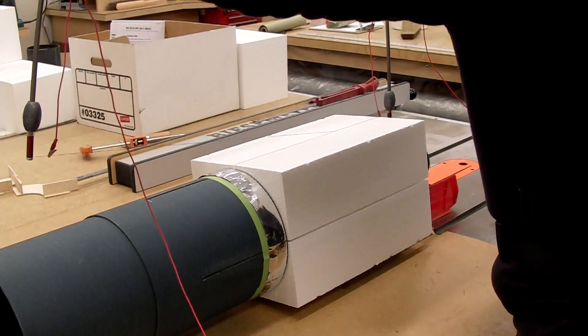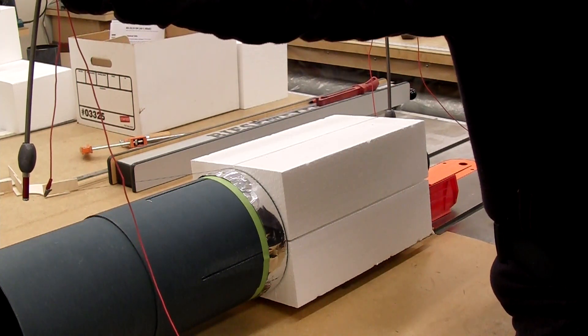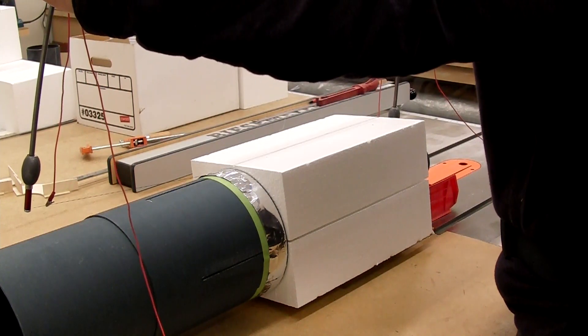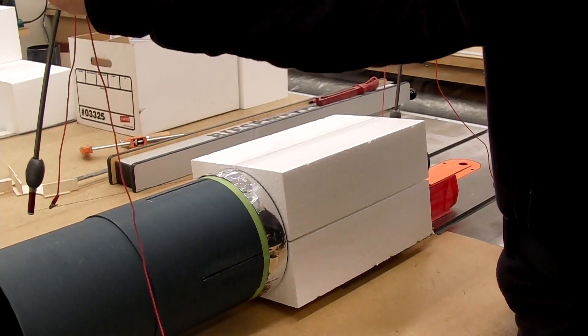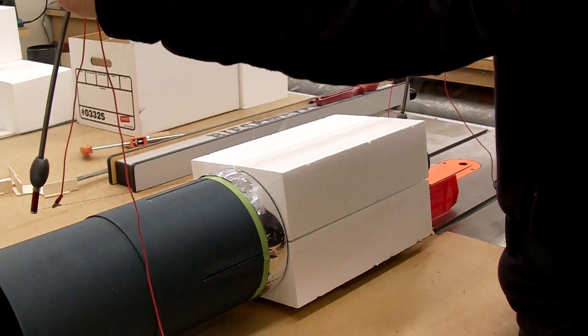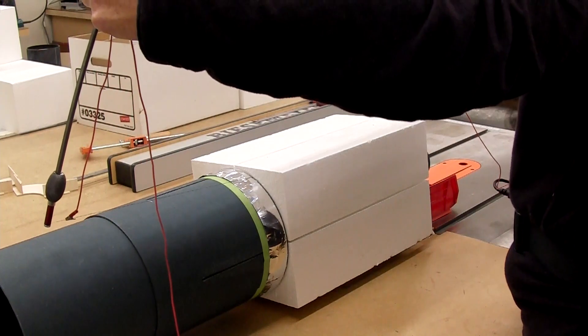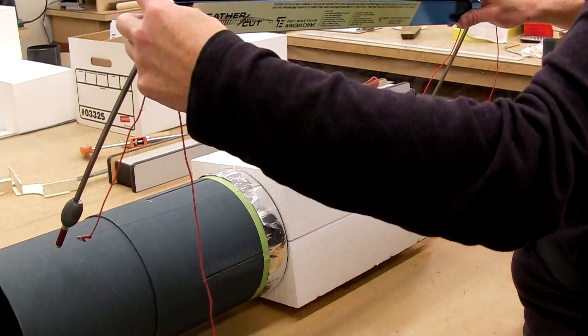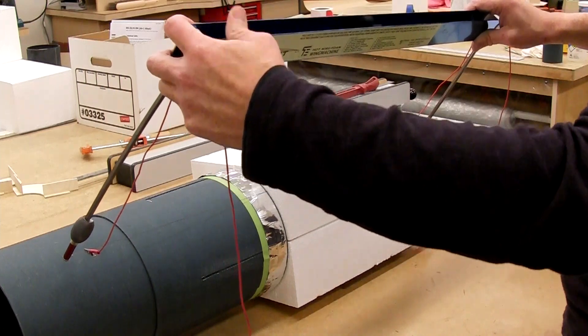And here we go cutting the first quarter block to shape, or actually slightly oversize. Again, this is a tricky cut because we want to keep this in line with the center of the tube, which means making a smaller radius on the right side than on the left side.